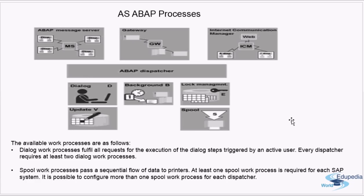A dialogue work process fulfills all requests for the execution of dialogue steps triggered by an active user. Every dispatcher requires at least two dialogue work processes — it is the dialogue work process that actually handles the processing of requests coming from the SAP GUI. A spool work process passes a sequential flow of data to printers; at least one spool work process is required for each SAP system, though more than one can be configured per dispatcher.